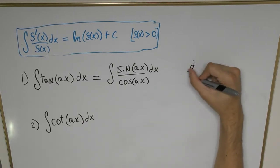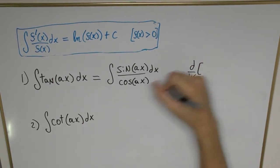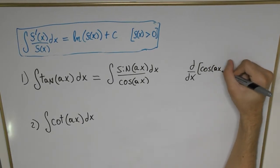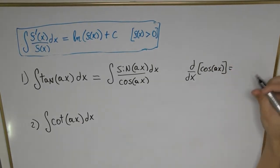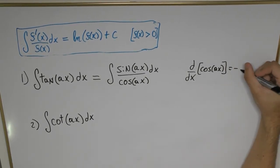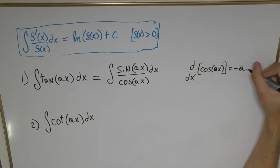is negative sine, which is minus a times sine of ax. Looking at our integral, sine of ax is already in the numerator. The only thing we're missing is this factor of minus a.